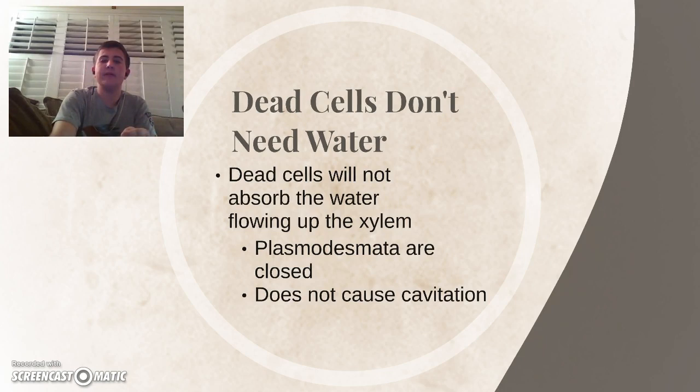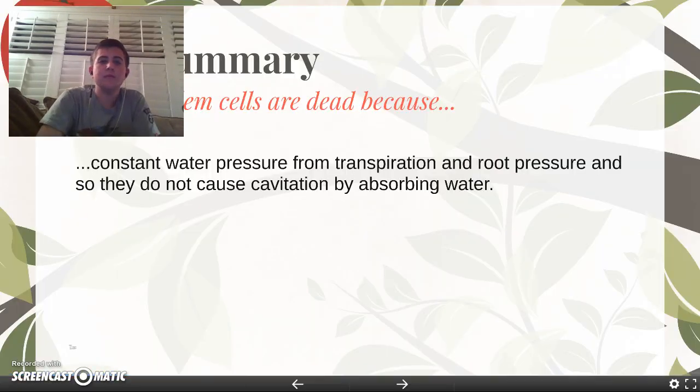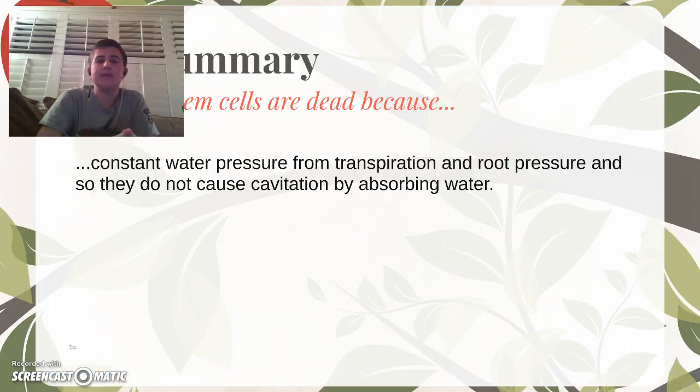If we just want to look at a quick summary of everything that we've covered. The xylem cells are dead because there's a constant water pressure from transpiration and root pressure. Normal cells cannot normally withstand this pressure, along with the vacuum that comes with it, so the cells are stretched out very thin and coated with lumen, so they have actual structural support. This lumen also assists because it does not cause cavitation by absorbing water into the vessel elements, which allows for a constant stream of water to flow up the xylem. In summary, xylem are dead, so that they do not ruin the flow of water.